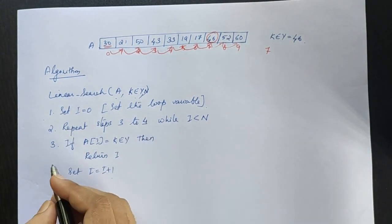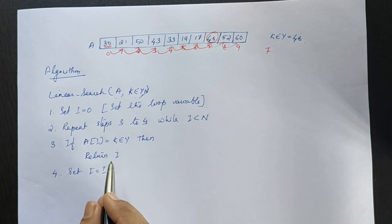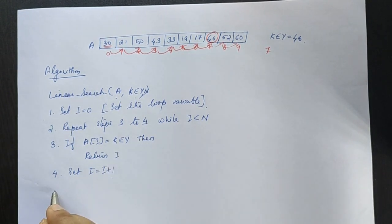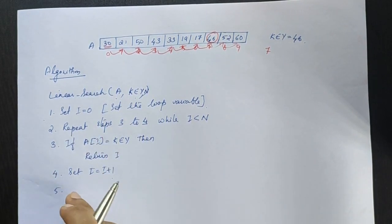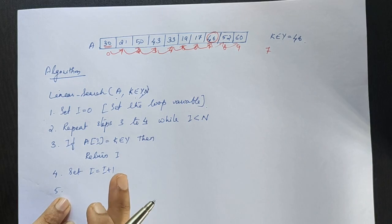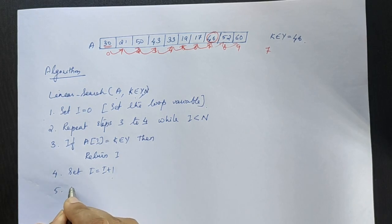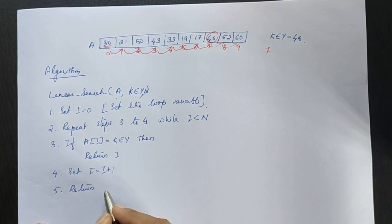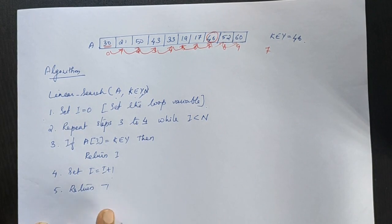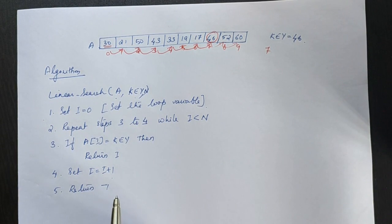While i is less than n. If we can't find the key, and the search is unsuccessful, we return minus one. If the key is not found, we return minus one.